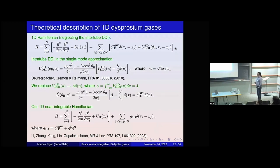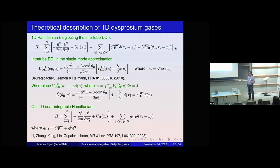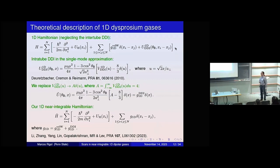An excellent question: the difference between thermodynamic quantities and relaxation. We teach statistical mechanics using a non-interacting gas in equilibrium, and one can ask how it reaches equilibrium without interactions. If interactions are very small, they will bring the system to equilibrium—but the thermal equilibrium they bring you to is the non-interacting thermal equilibrium. So indeed the dipolar interactions will lead to thermalization at some point, but thermodynamically they make almost no difference. That's something very interesting to think about.